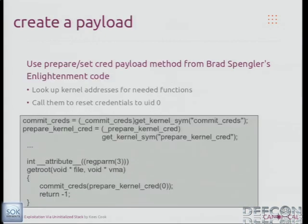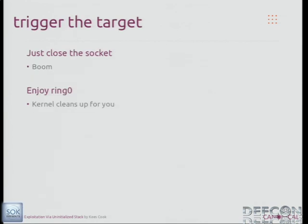Then we create a payload for the kernel to run. This is based on Brad Spengler's enlightenment code — you basically create new credentials as root and commit them to the local process, setting your UID to zero. This is the entire function the kernel needs to run to give that process root. Finally, after you perform the overwrite, you just close the socket and it calls that function for you. Everything's nice — the kernel cleans up for you.